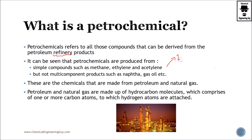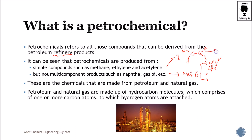These are not multi-component products such as naphtha or gas oil. A petrochemical is a single component, whereas petroleum refining products are not. For instance, natural gas is not a petrochemical because it has methane, ethane, and many other materials. Methane can be considered a petrochemical, and ethylene certainly is — it is a single material which is then used for plastics.